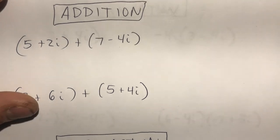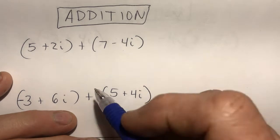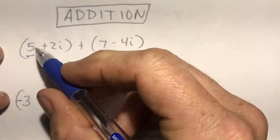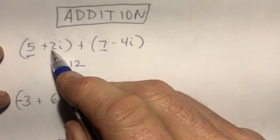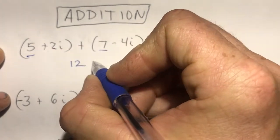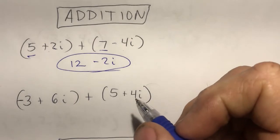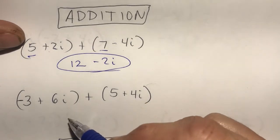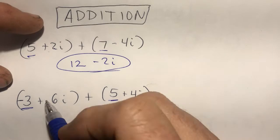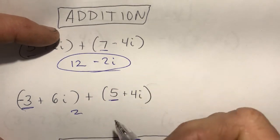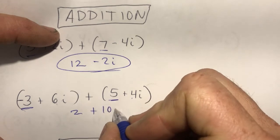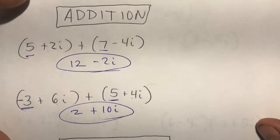The first operation is addition. When you add complex numbers, all you do is look at your like terms. My real part here is five, my real part there is seven, so I do five plus seven which is 12. My imaginary parts: positive 2i and negative 4i — 2 plus negative 4 would be negative 2i. Here's another addition: negative 3 and positive 5 give positive 2, and positive 6i plus positive 4i gives positive 10i.